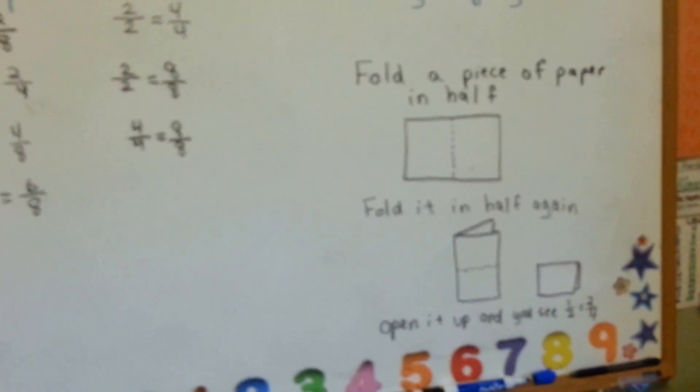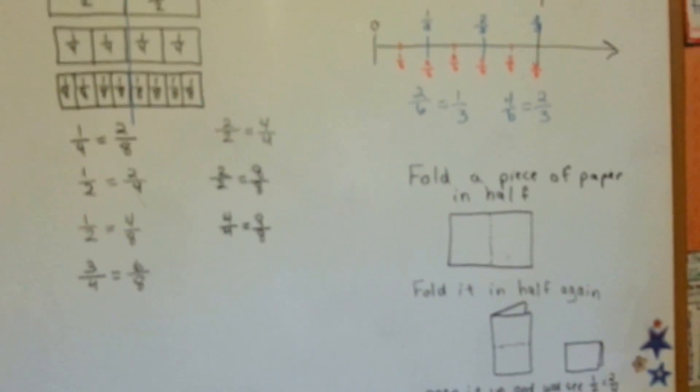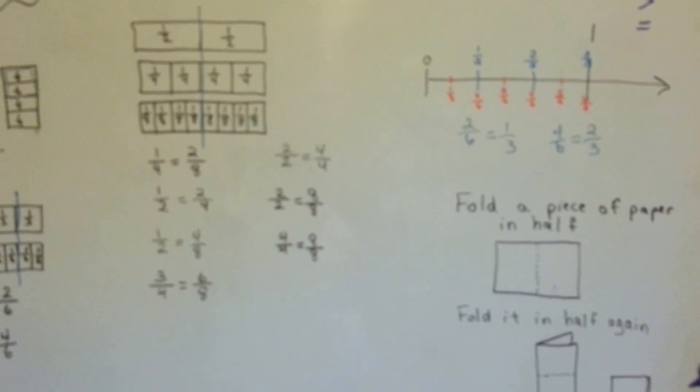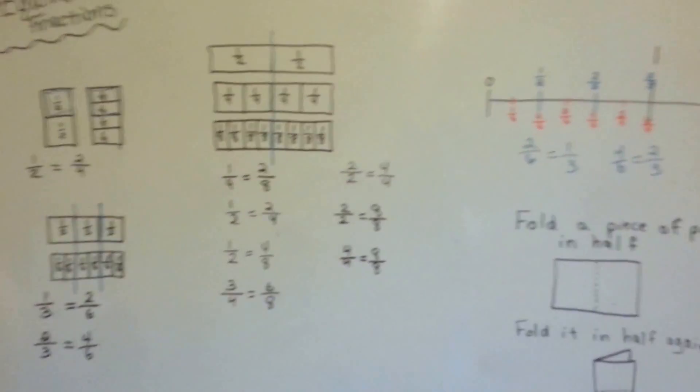Try to do that on your own. Get a piece of paper. See if you can find out that four eighths is equal to a half.